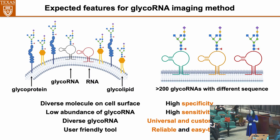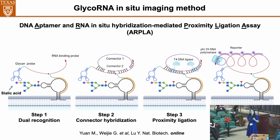Taking all these requirements into consideration, my team came up with the first imaging method to visualize glycoRNA inside cells — we can call it a camera. It is based on DNA aptamer and RNA in-situ hybridization together with a proximity ligation assay, and it involves a four-step reaction.